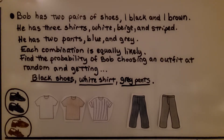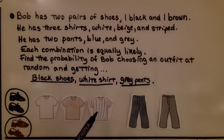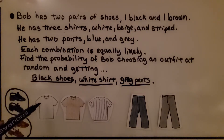Bob has two pairs of shoes: black and brown. He has three shirts: white, beige, and striped. And he has two pairs of pants: blue and gray. Each combination is equally likely. Find the probability of Bob choosing an outfit at random and getting black shoes, white shirt, and gray pants.